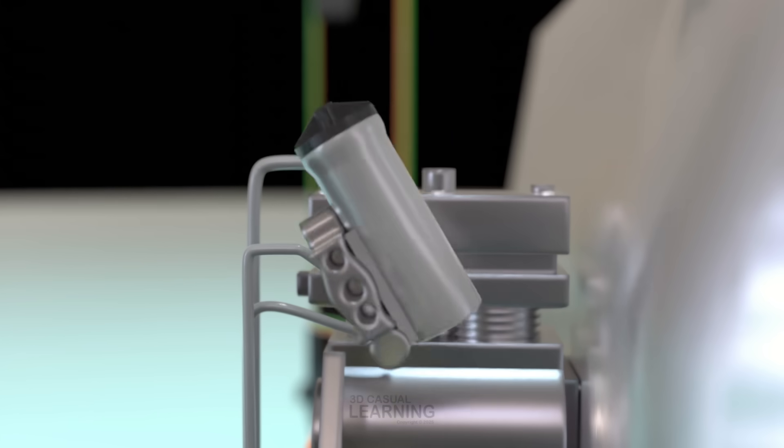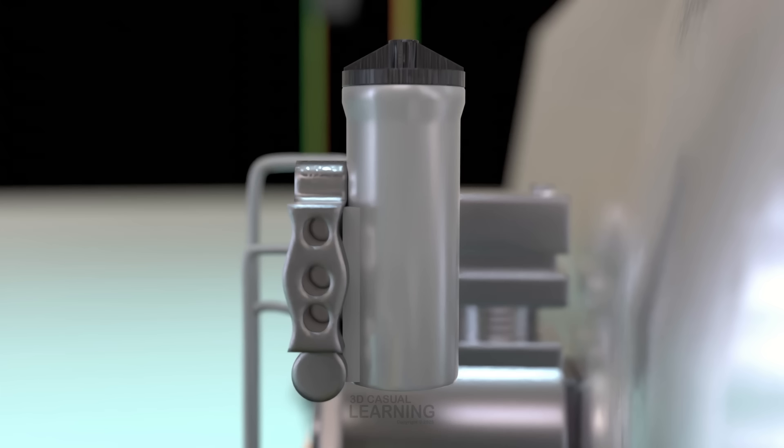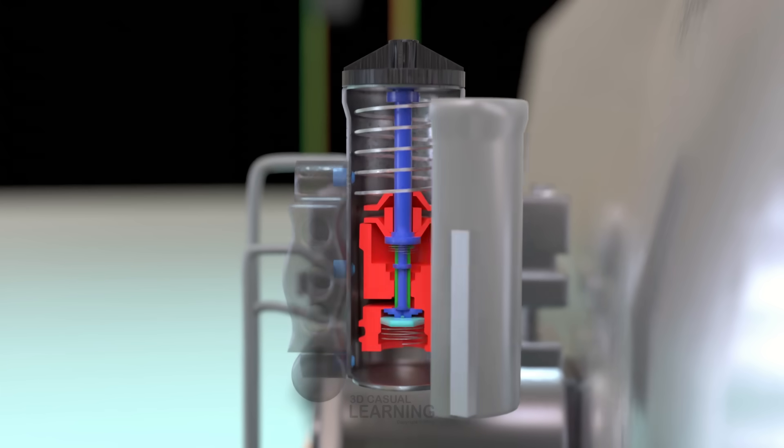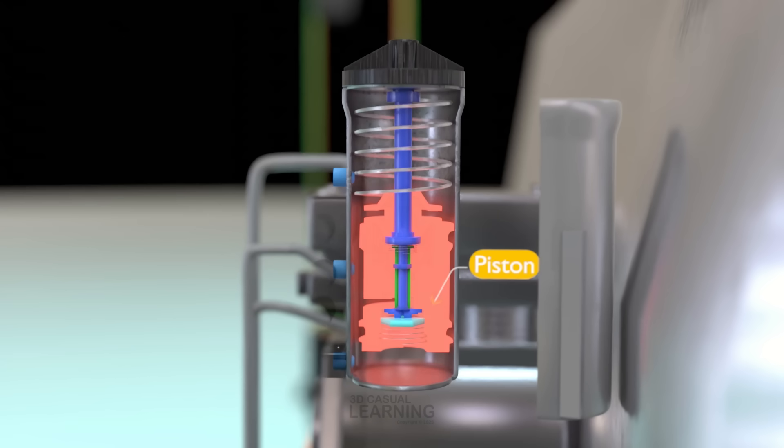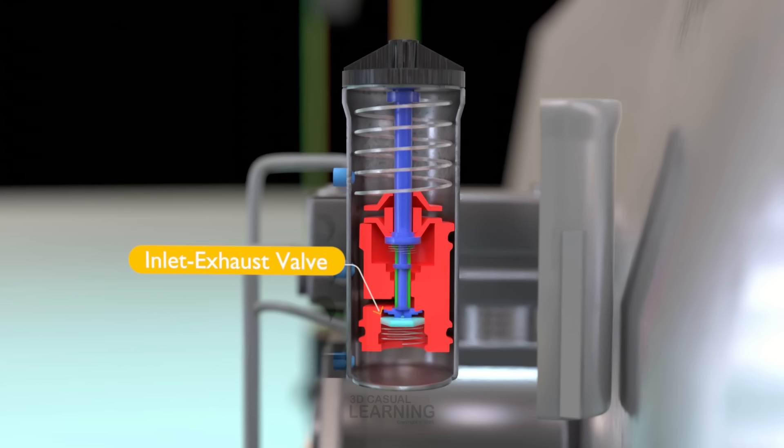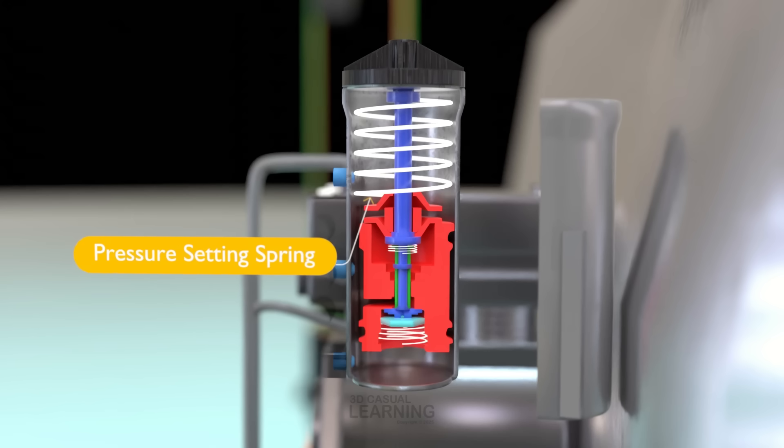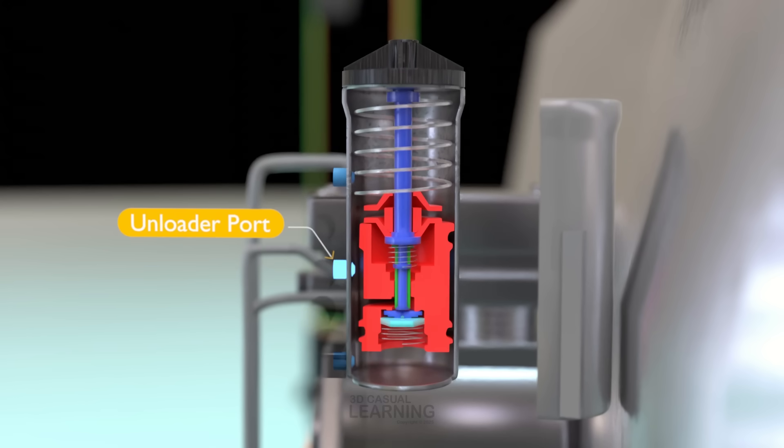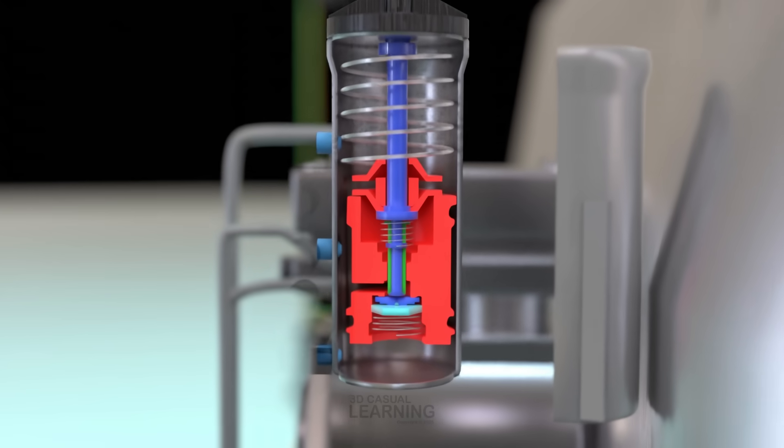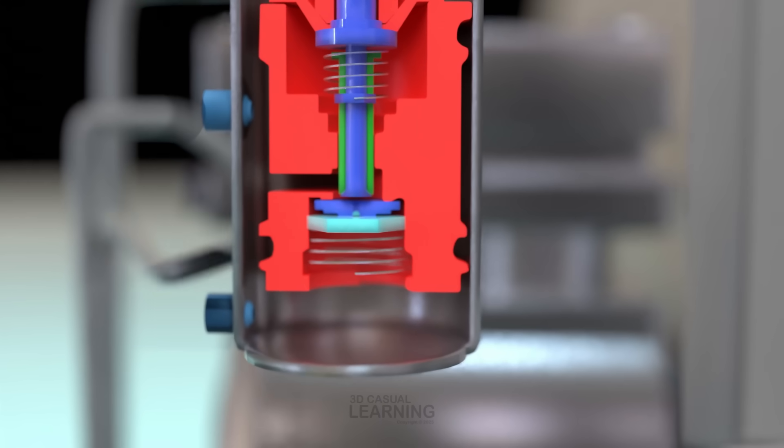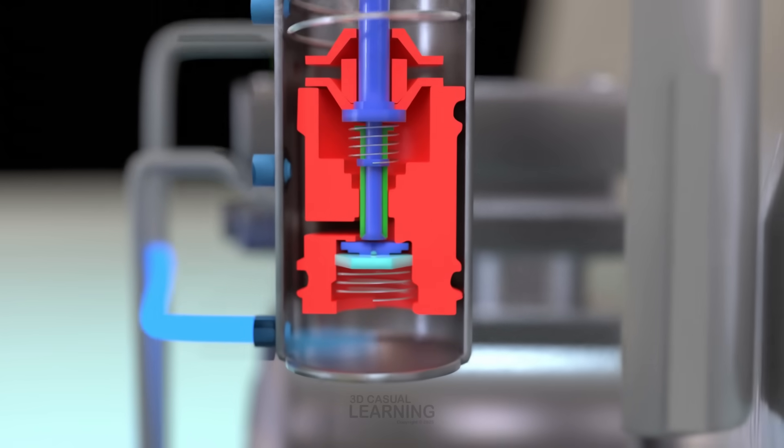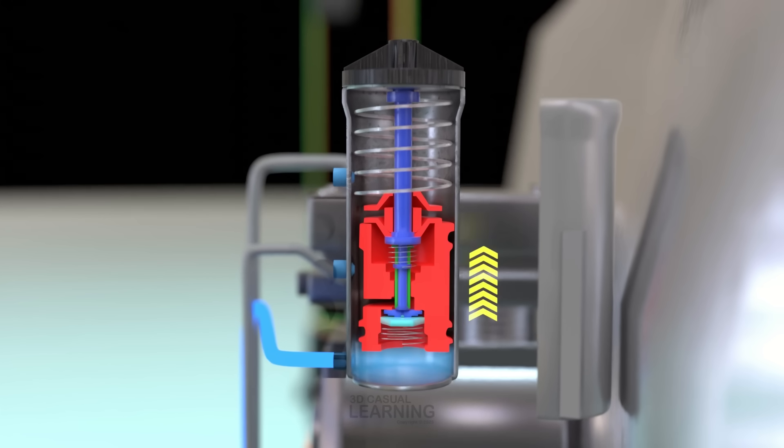The air governor has several key parts. As the air compressor runs, and pressure builds in the reservoir, air pushes against the governor's internal piston. This piston, along with the attached valve, moves against the resistance of the pressure-setting spring.